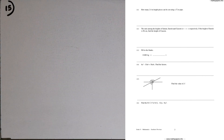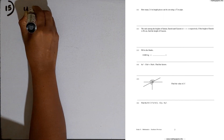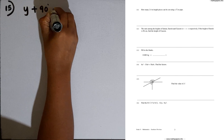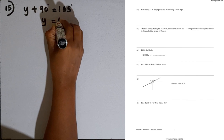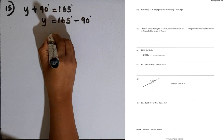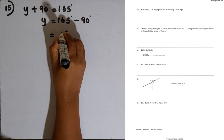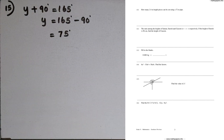Question number 15: we are given a diagram. Find the value of y. Here we have vertically opposite angles. Using the property of vertically opposite angles, I can find y by subtracting 90 from 165. The answer is 75 degrees.